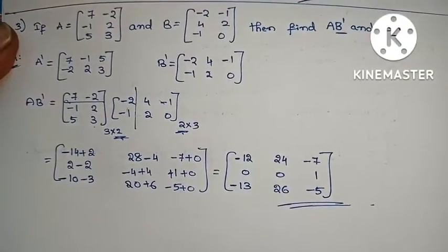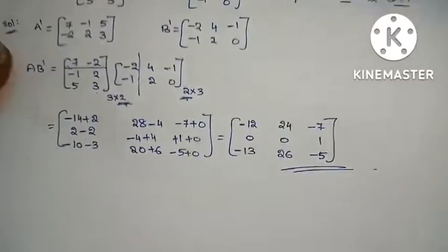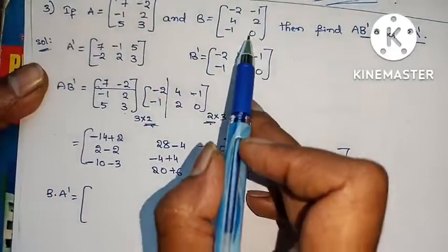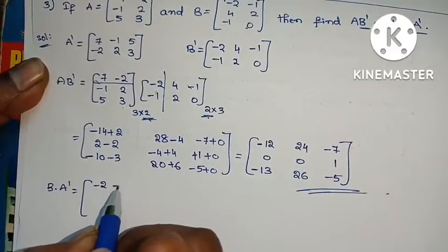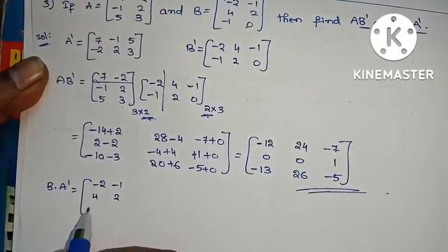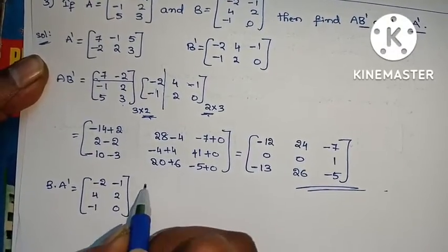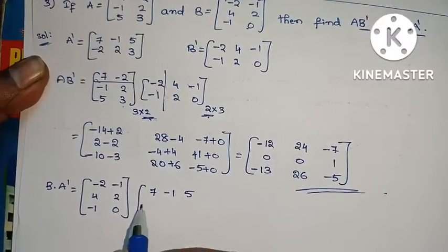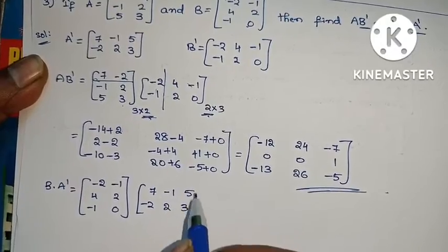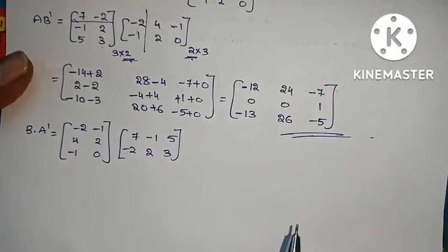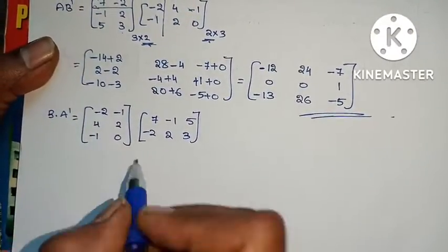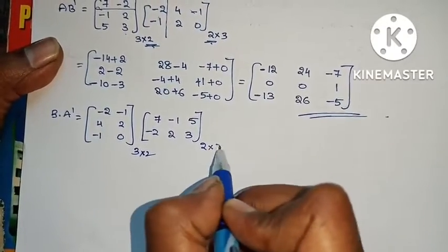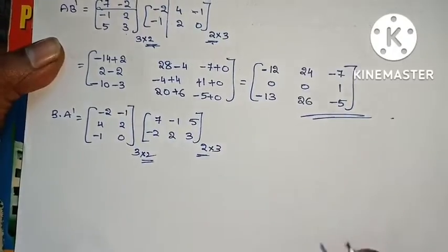Now B into A transpose. B is [-2, -1; 4, 2; -1, 0] into A transpose which is [7, -1, 5; -2, 2, 3]. Checking: 3 rows, 2 columns into 2 rows, 3 columns — number of columns equals number of rows, so multiplication is possible.